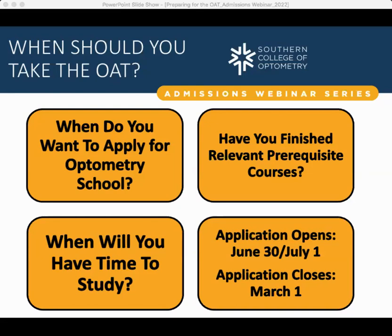The SCO application opens either on June 30th or July 1st — it varies from year to year — but it will always close on March 1st. SCO is a rolling admissions institution. Your personal application deadline should be June 30th, not March 1st. If you can't submit right at the beginning, I recommend submitting no later than the holidays — Thanksgiving or Christmas. Don't try to wait until March 1st to have your OAT taken and submitted.